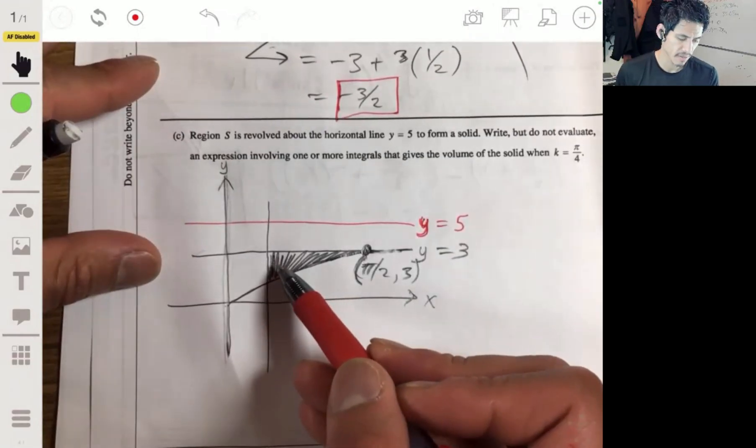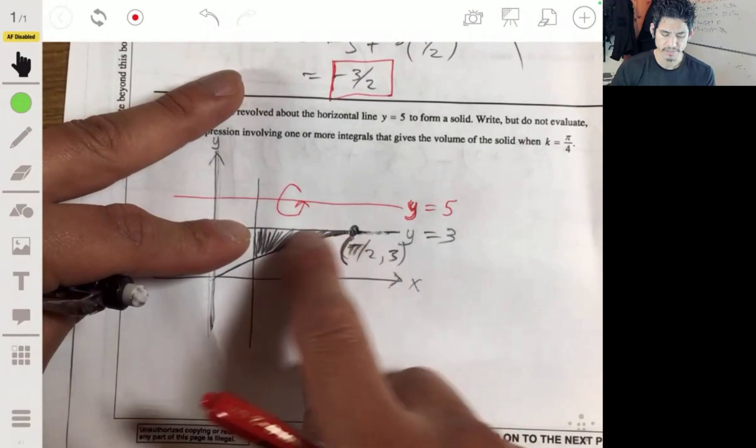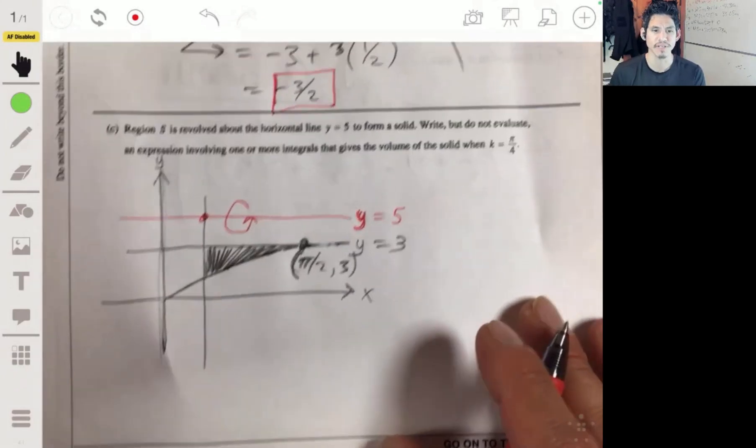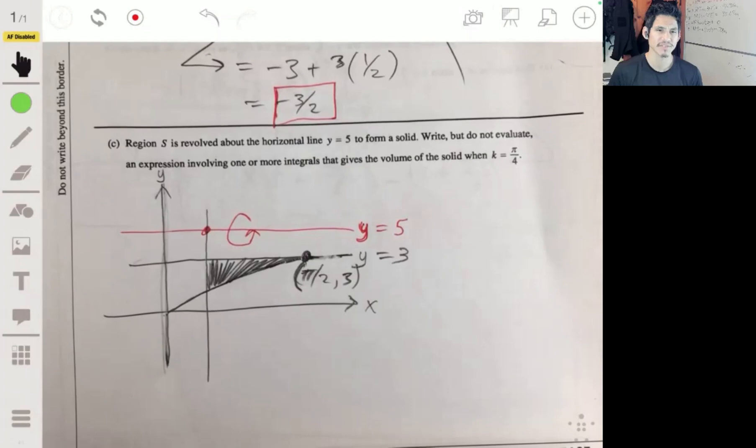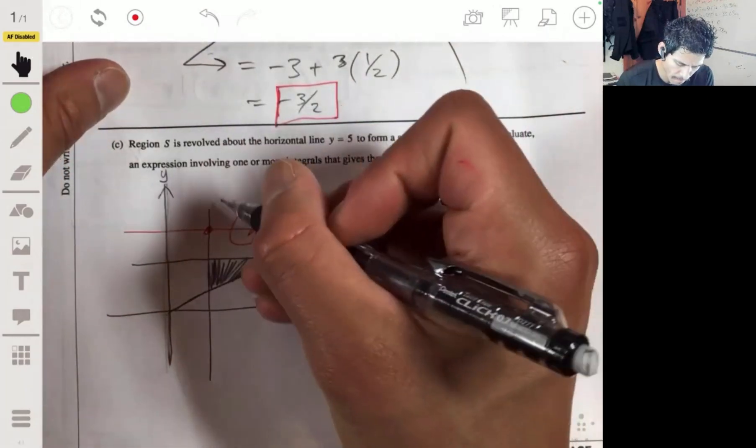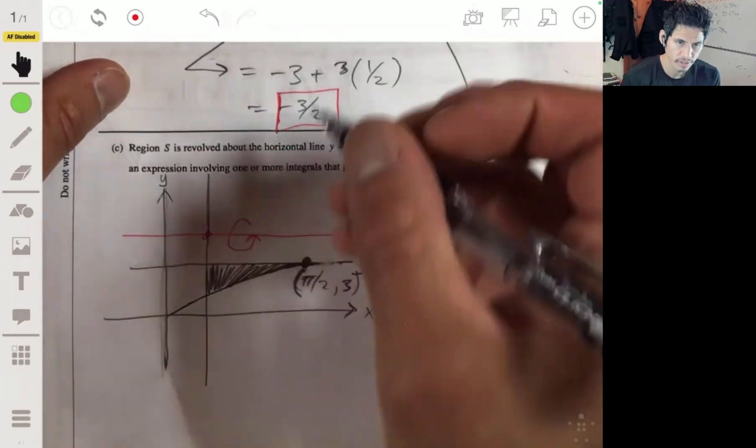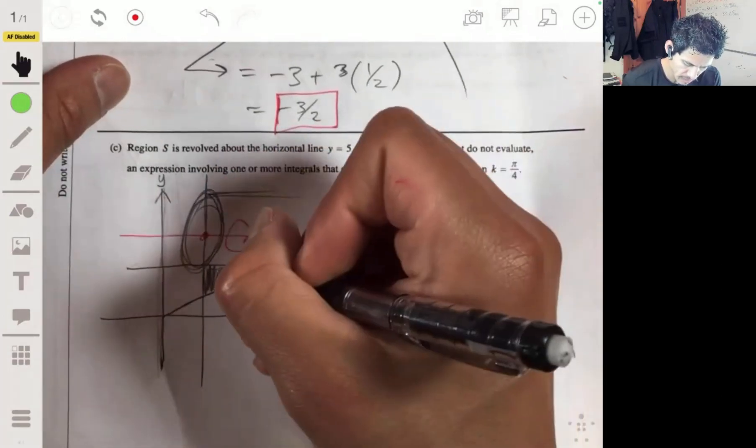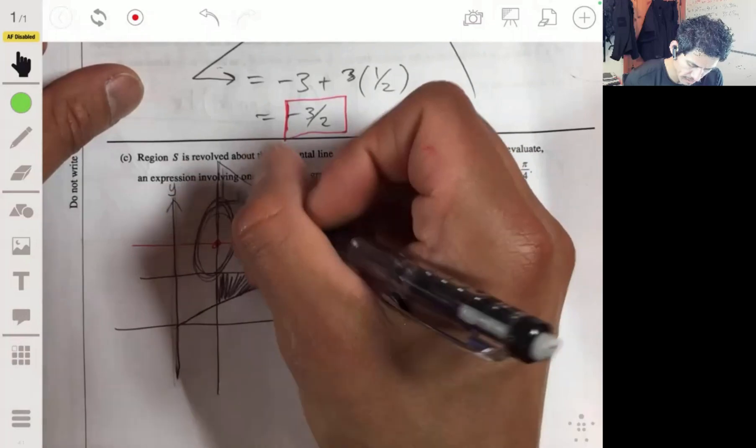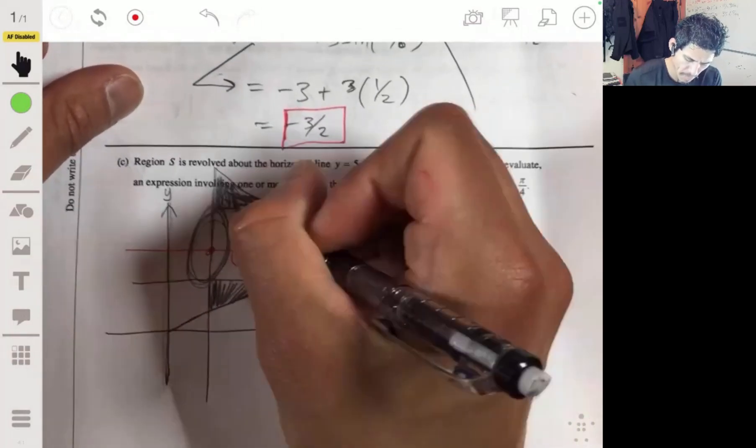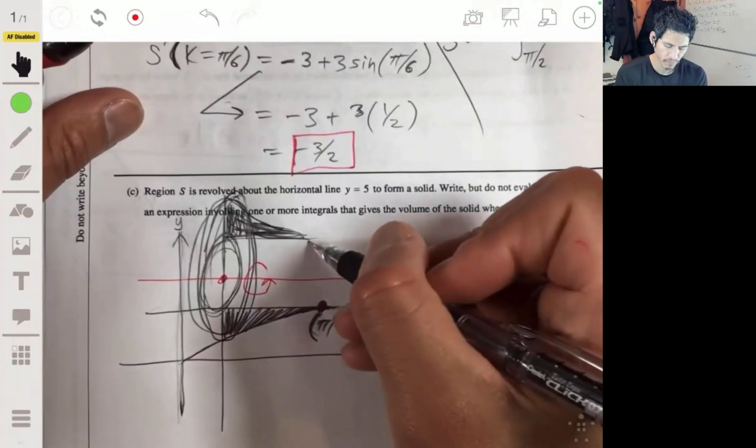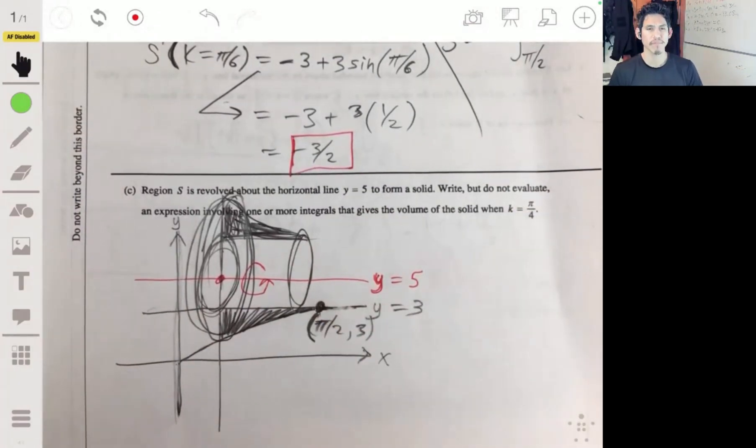There's our region S. This is the line y equals 3. The graph stops over here. This point was pi over 2 comma 3. Now, we're going to revolve this region here about this line. This region about this line. I really like these problems. Some students don't like them because they're just hard sometimes.